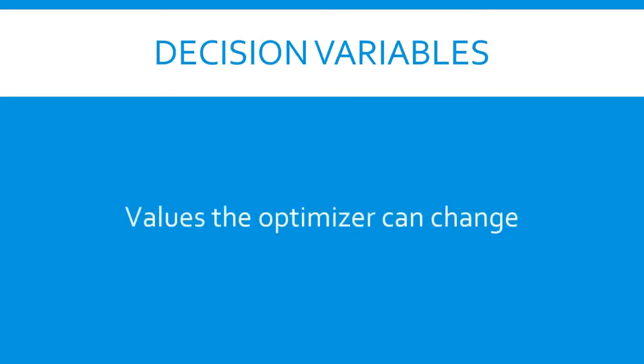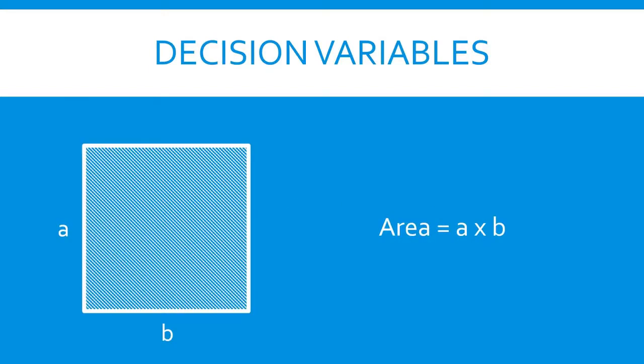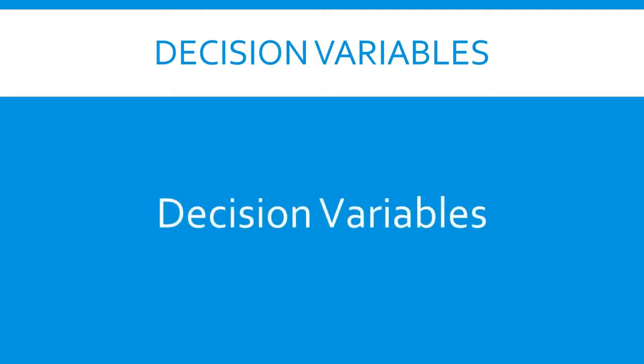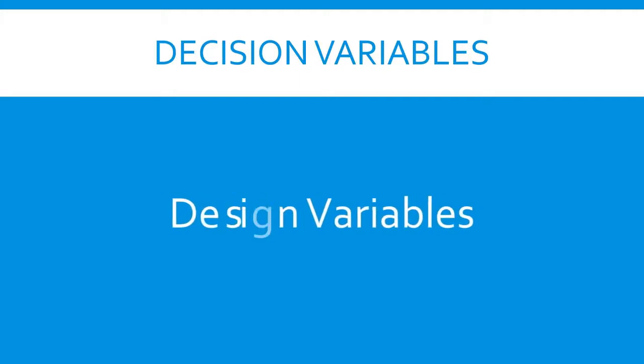Decision variables are the inputs to your problem that your optimizer is allowed to change to try to improve the objective function value. In our square example from before, the decision variables would be the length of the two sides. These variables are also called design variables or manipulated variables.